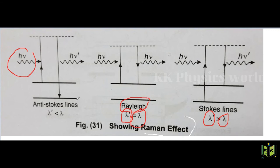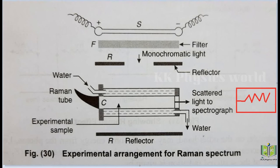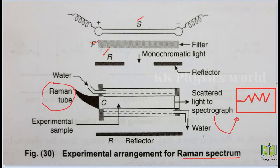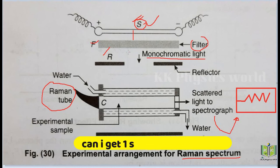Now we see the experimental arrangement of the Raman effect. Here we have a mercury lamp as source S, a filter F, and a reflector R. We also have a Raman tube and a spectrograph. The mercury lamp is the source of light, which passes through the filter to give monochromatic light — a single frequency beam — which then falls on the reflector and then on the Raman tube.